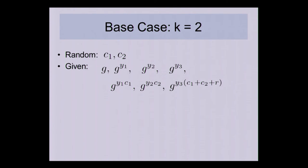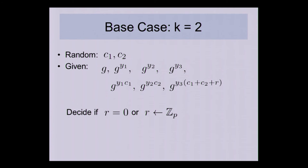Looking at the base case of our lemma where k equals 2 — meaning only two random exponents are chosen — it looks like this: we give you g^(y_1), g^(y_2), g^(y_3), g^(y_1·c_1), g^(y_2·c_2), and g^(y_3·(c_1+c_2+R)). You need to decide whether R equals zero or R is random. If R is zero, this is subset-sum structured: y_1·c_1 corresponds to the singleton set {1}, y_2·c_2 to singleton {2}, and y_3 is attached to the full set c_1+c_2. But if R is random, this whole term is random and the three a_k values are just independent random values — giving us the random case of the lemma.